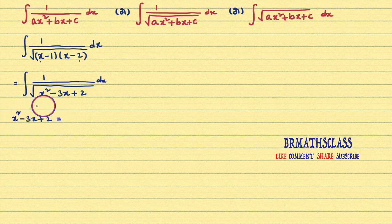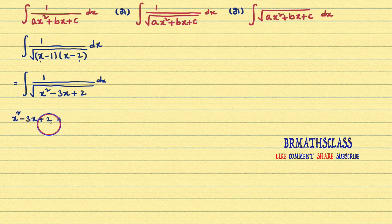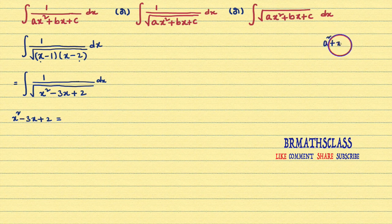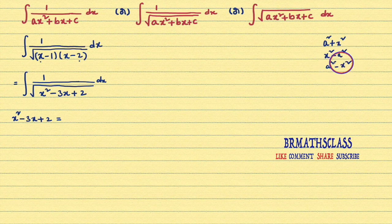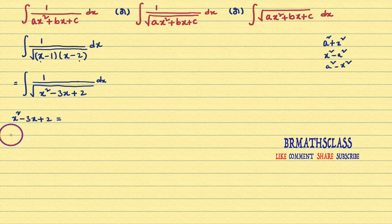If you observe this expression, the x² coefficient is 1 only, so nothing to worry. Now my main intention is I want to write this whole expression in any one of these forms: a² + x², or x² - a², or a² - x². I just want to write this full expression in any one of these forms, so we will follow a trick.